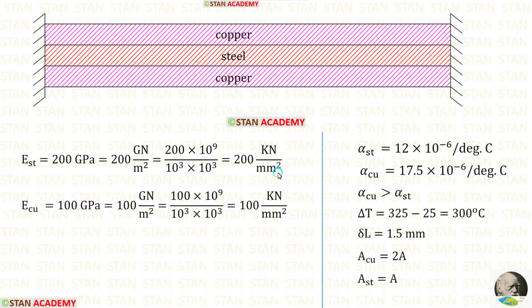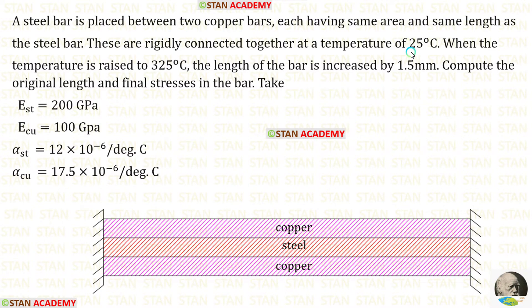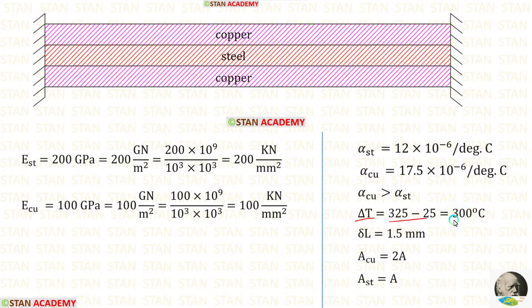First let us make a given data. The Young's modulus are given in gigapascal. We can convert them into kilonewton per millimeter square. The alpha value for copper is higher than the alpha value for steel. Now let us find delta T. For that we have to subtract the initial temperature by the final temperature. When we do that we are getting 300 degree Celsius. The increase in length is given as 1.5 millimeter. We know that the area of steel and copper bars are same. Since there are two copper bars, the area of copper is 2A and the area of steel is A.